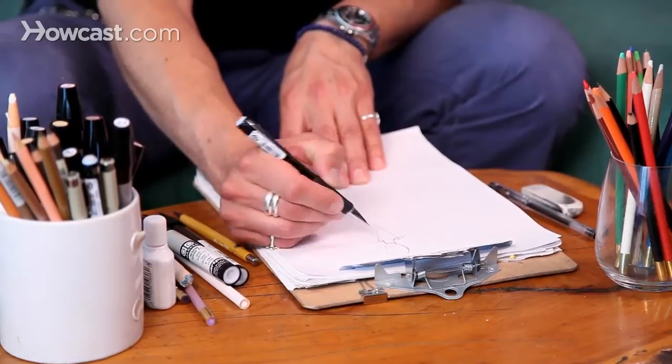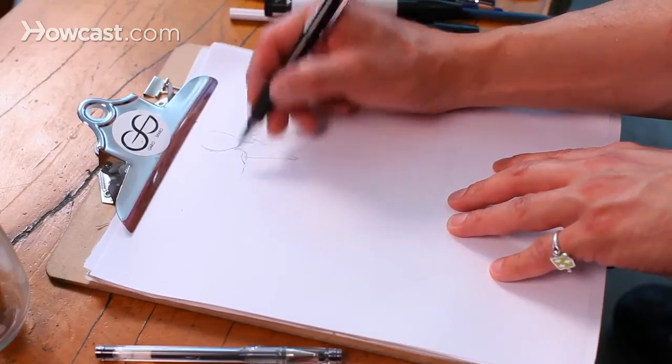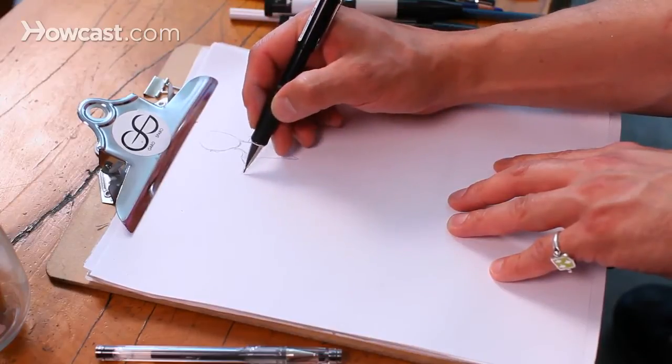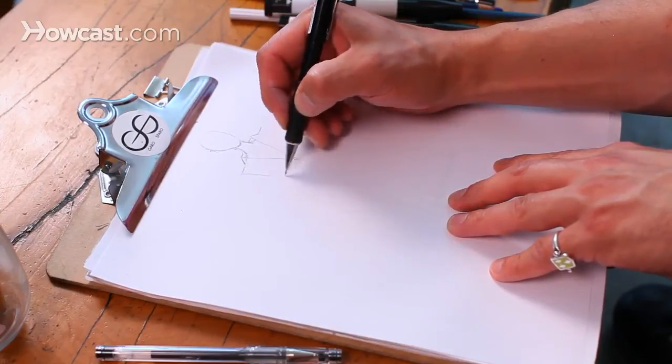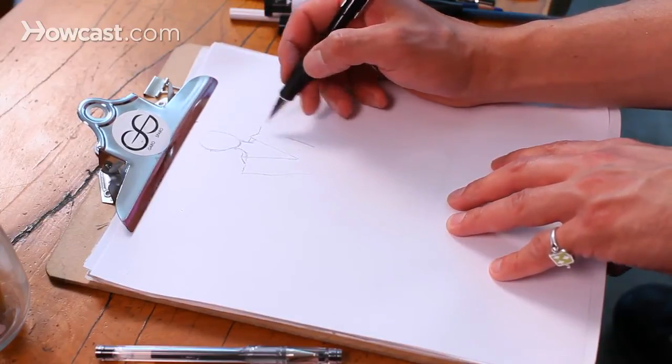You bring it up off the shoulder like this. This is the shoulder line right here. When drawing jackets, you want to exaggerate the shoulders a bit. It just adds to the whole structural feel of the garment.